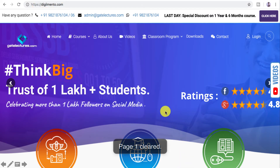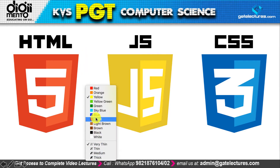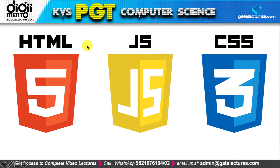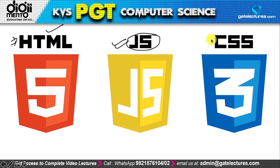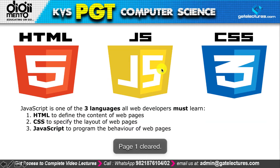Let's start with a basic introduction of JavaScript. In web development there are three things: HTML (now HTML5), JavaScript (also called JS), and CSS which is cascading style sheet. With the help of these three things you can create beautiful web pages and design websites.